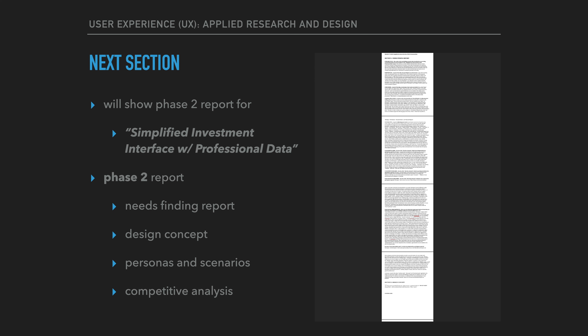Now that we've defined the second phase of our UX research and design project, it's time to review a sample Phase 2 report. As part of this report, we will continue to develop our research and design project called 'Simplified Investment Interface with Professional Data.' The Phase 2 report will consist of four sections: a needs finding report, design concept, personas and scenarios, and a competitive analysis. Reviewing the report will give you a good sense of the type of information which must be included and how it needs to be structured to implement a professional UX research project.